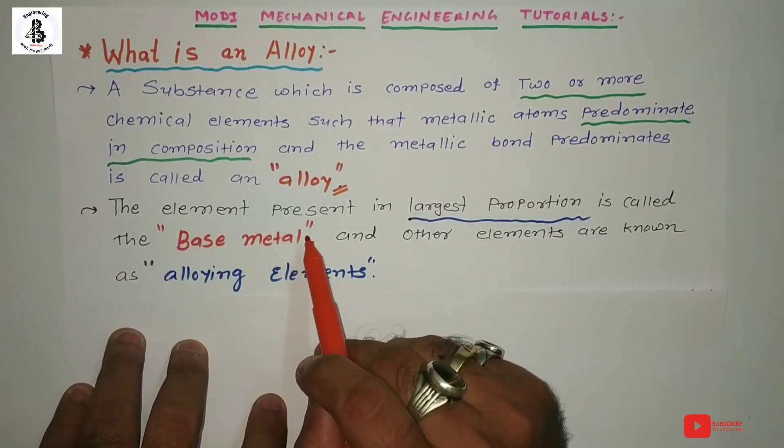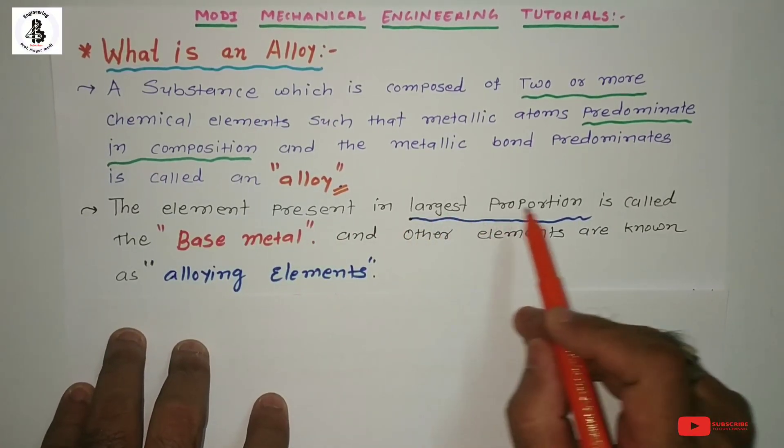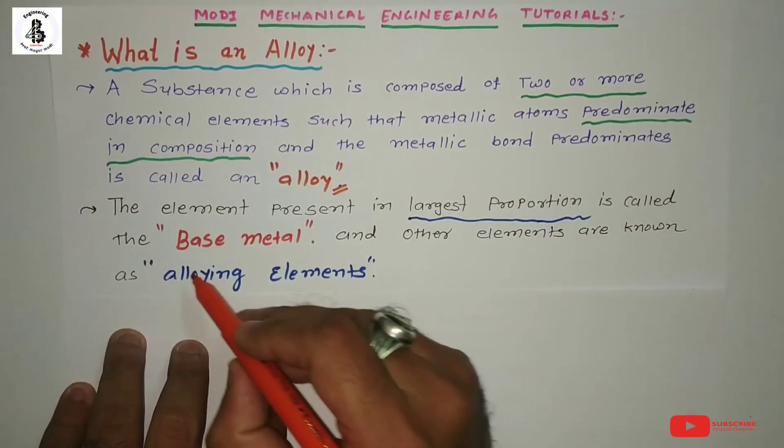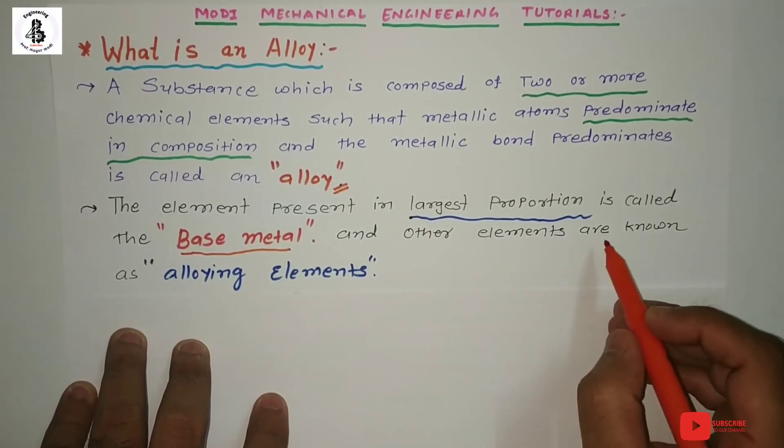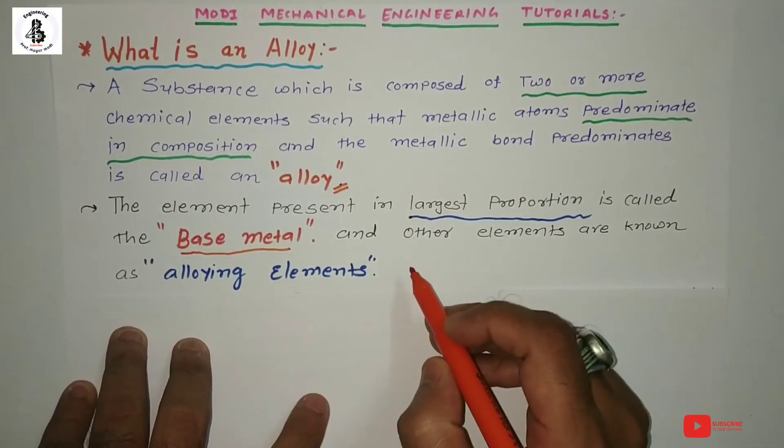The element present in largest proportion is called the base metal, and the other elements are known as alloying elements.